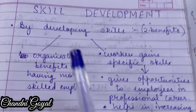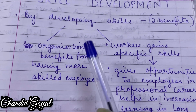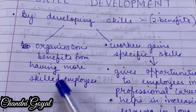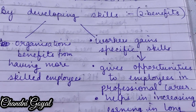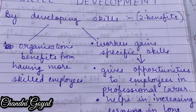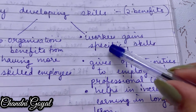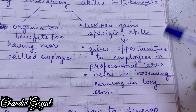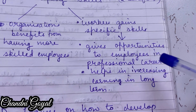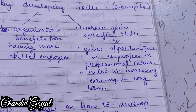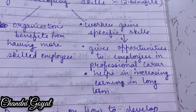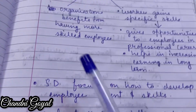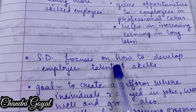Skills develop karke do benefits milte hain organization ko. Sabse pehle, organization ko ye benefit milta hai ki unke paas zyada skilled employees ho jate hain. Doosra, workers ko bhi benefit hota hai kyunki unke kuch specific skills gain ho jate hain. Agar workers ke specific skills gain honge to unko professional career mein bahut zyada fayda milega, aur zyada opportunities milengi. Long term mein unki earning barhne ke chances bhi ho sakte hain.